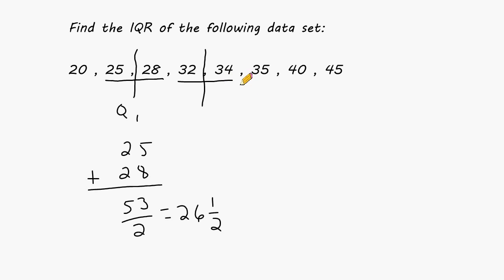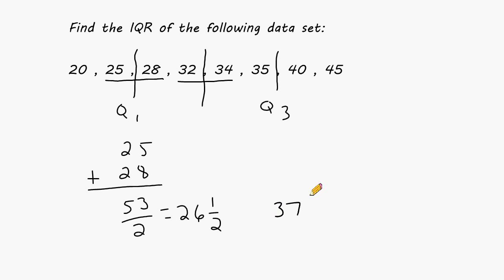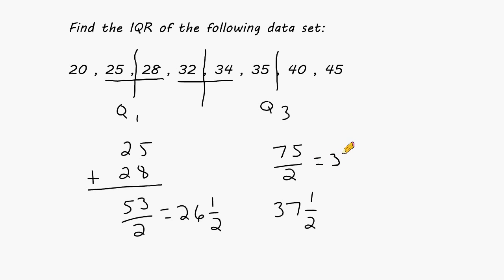Now we have to find the median of the second half of our data set. We have four numbers in the second half just as in the first half, so we have to cut that half in half. Notice that we have quarters or quartiles here, and this location is Q3. We have to figure out what is in the middle of 35 and 40. To find this value, take those two numbers and add them together — that gives 75 — then divide by 2. So 75 divided by 2 is 37.5. Q3 is 37.5.